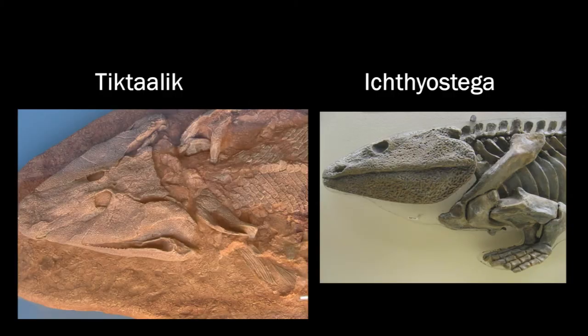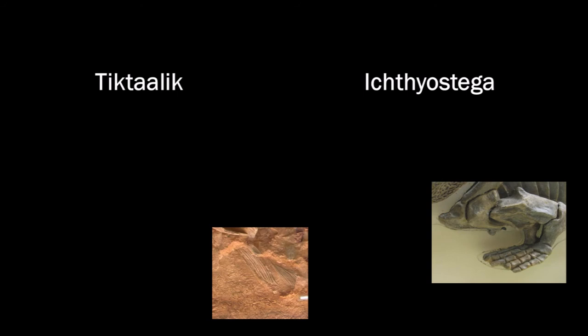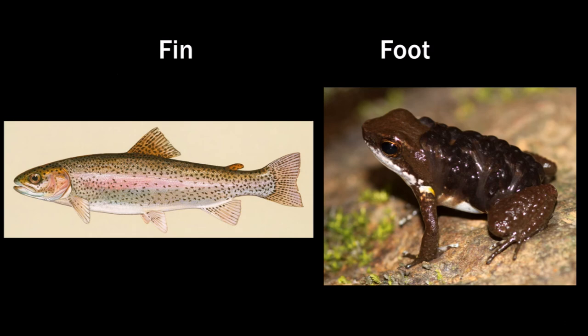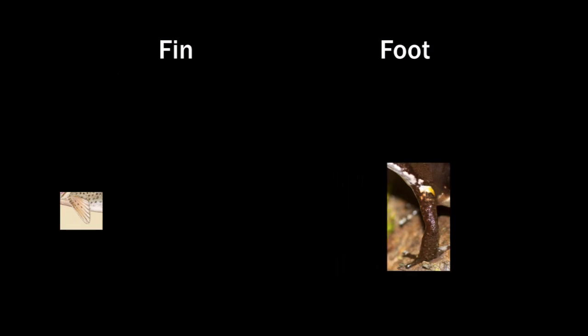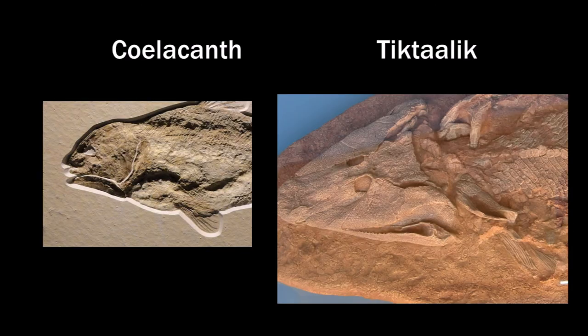Tiktaalik and Ichthyostega. So what makes scientists think that Tiktaalik could walk? Walking appears to demand that the foot can be placed flat on the ground — something we learned from the coelacanth. Fins are made for swimming. That can be defined as the biggest difference between a fin and a foot. Let's take a fish and a frog for example. The coelacanth was rejected because it was incapable of stepping — it cannot place its fins flat on the ground.